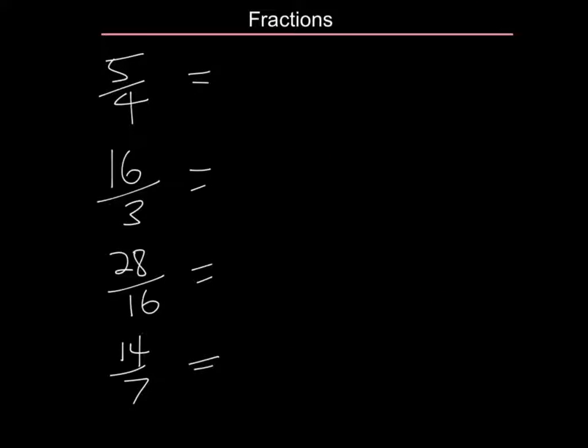So here are my answers. For the first one, 5 divided by 4 goes 1 time and 1 remainder. So 5 quarters is 1 and 1 quarter.